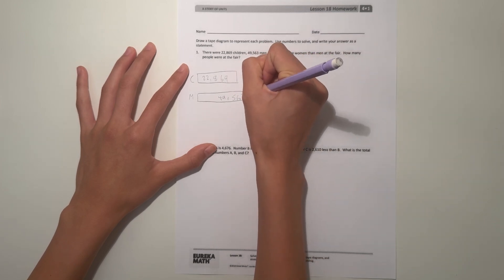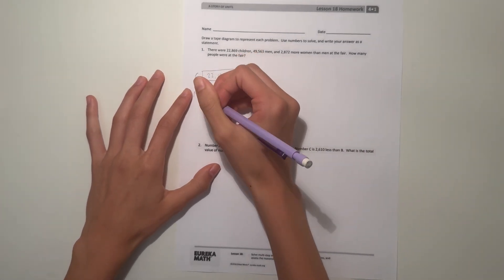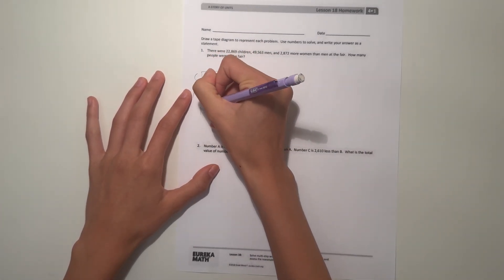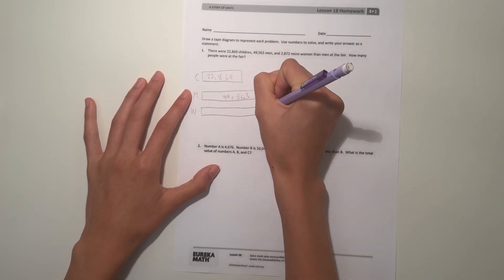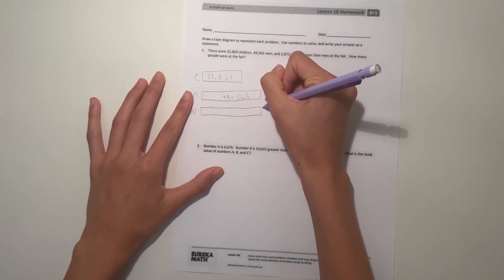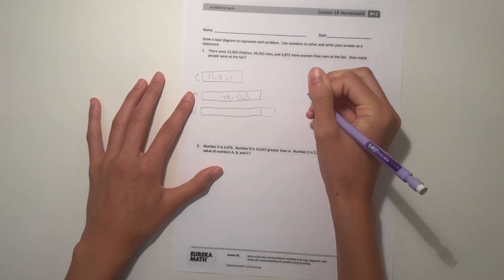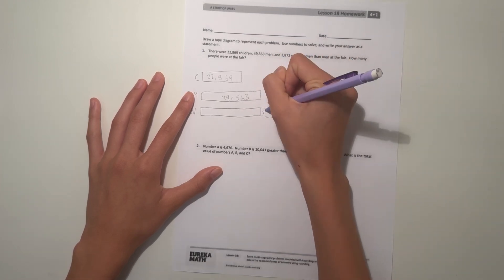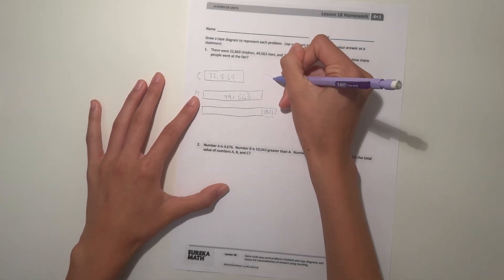But we don't know how many women there are. It says there's 2,872 more women than men, which means W for women has at least 49,563, but then it has 2,872 more people. So we're trying to find out the total amount.